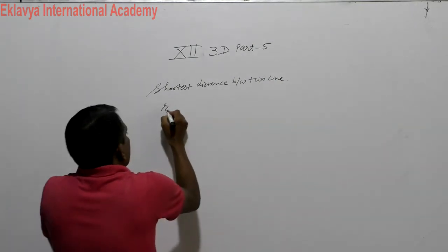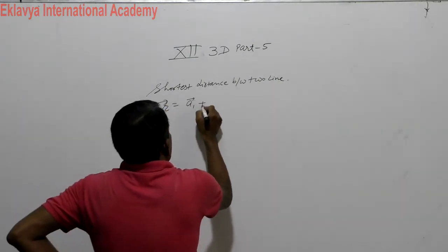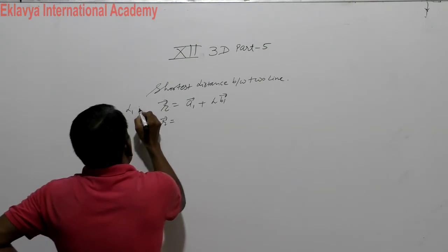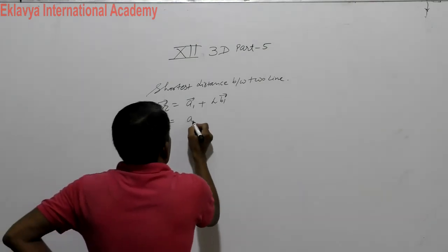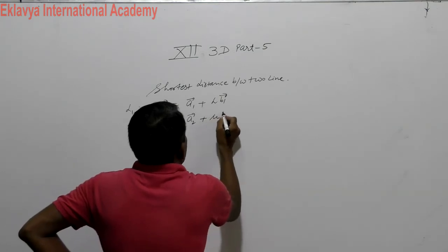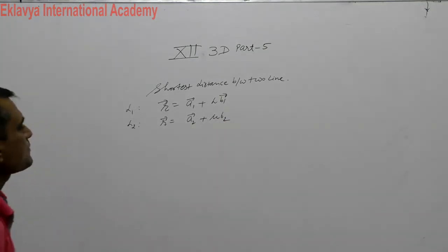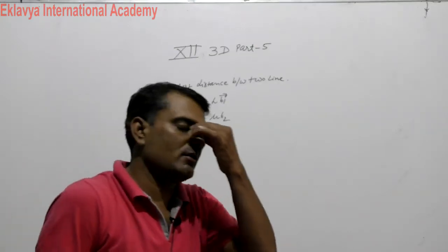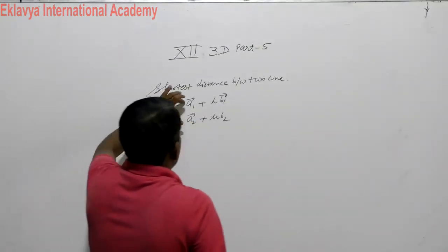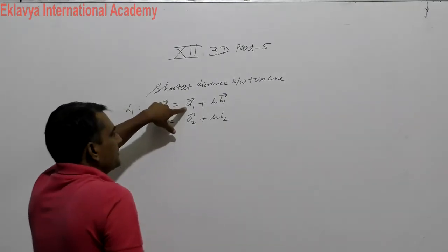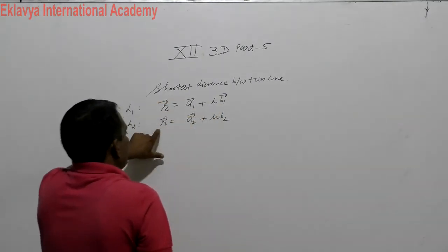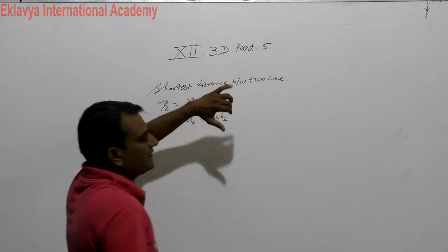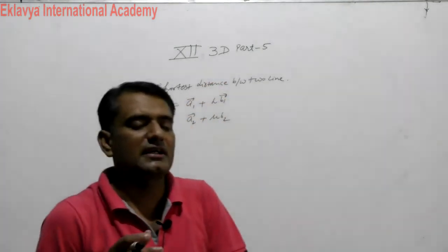Let one line be described by A1 plus lambda of B1, and another line by A2 plus mu of B2. These are two lines. The shortest distance is the perpendicular distance between them. From these two parallel direction vectors, we take the perpendicular vector, that is B1 cross B2.